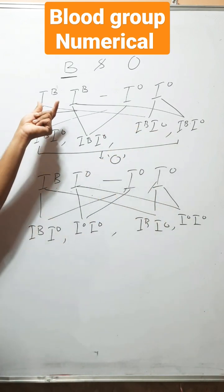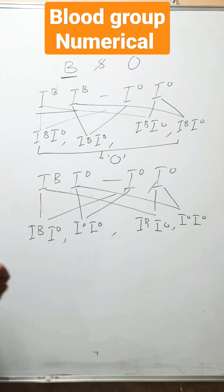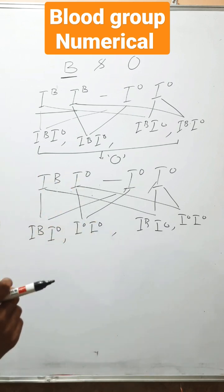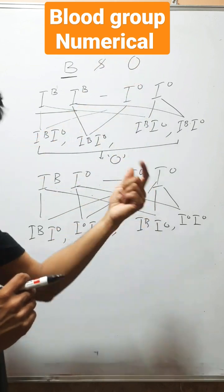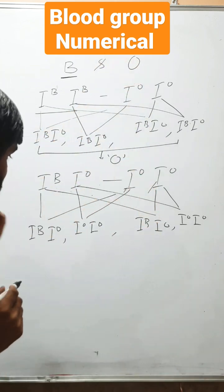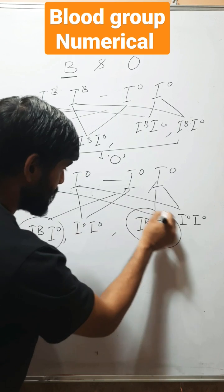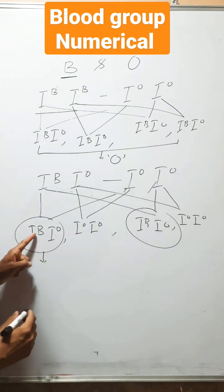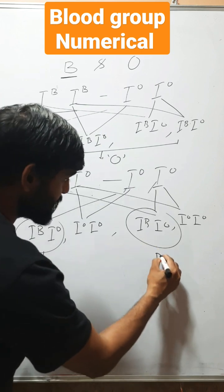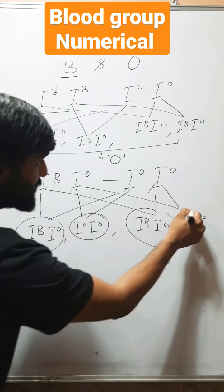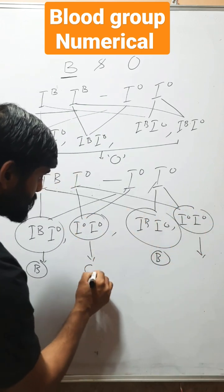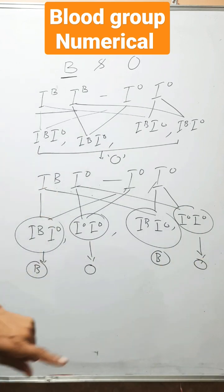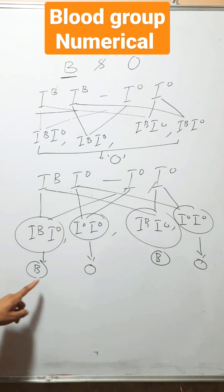But when this person with B blood group is heterozygous, then what will happen? If it is heterozygous, it means it has one allele for B blood group and another for O. And the person who has O blood group has both alleles for O blood group. In this situation, one allele is for B blood group and another is for O. Here, O is recessive, so the blood group will be B. In the other case also, blood group will be B. But when both alleles of O are present, blood group will be O. So when a person is heterozygous for B blood group, 50% of their children will be with B blood group and 50% will be O.